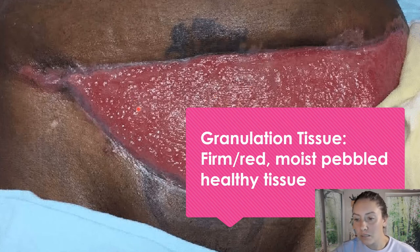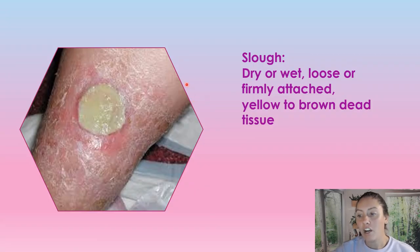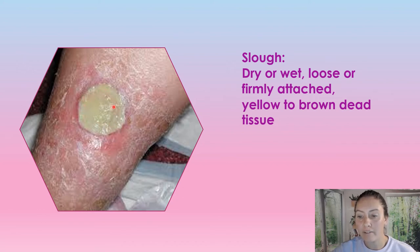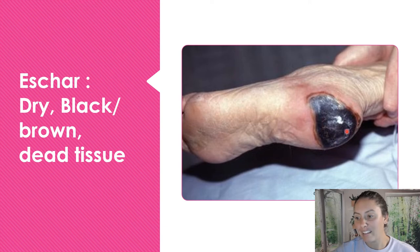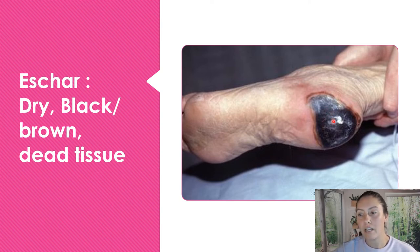Granulation tissue is moist, it looks pebbly, and that's healthy tissue. Next we have slough — this can be dry or wet, loosely or firmly attached, and it's yellow to brown, as you can see here. It is just dead tissue and we would have to work on removing that with a debridement method. Next we have eschar — this is our dry black dead tissue. Something like this on the heel we would never remove unless it starts becoming unstable because of blood flow issues.